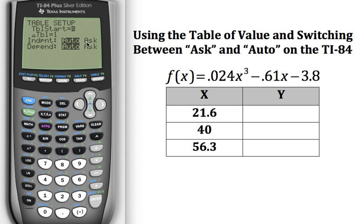So I'm going to want to switch it. If I want to set it up so that I can put these values of x in, I want it to be on ask. So I'm going to arrow down until I get to it and you notice that's blinking right there. I'm going to arrow to the right because I want it to be on ask and then I'm going to hit enter. Okay, that's going to switch it.